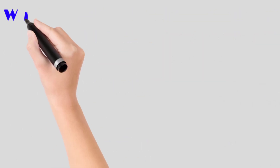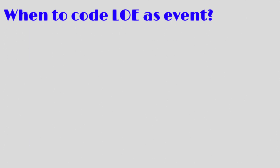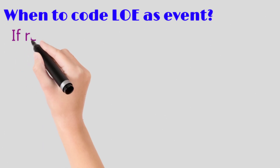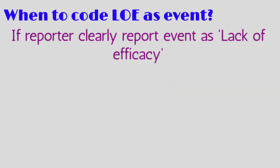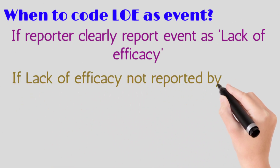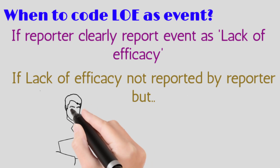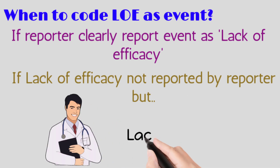Now let's discuss when to code lack of efficacy as an event in the case. The first scenario is if the reporter clearly reports the event as lack of efficacy, then we should code lack of efficacy as an event in the safety database. The second scenario is if lack of efficacy is not reported by the reporter; however, as per medical judgment, the medical reviewer of the case can capture lack of efficacy as an event.